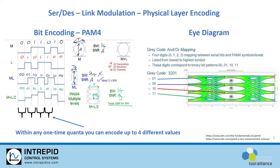To get higher data rates and a reliable data flow, we need to encode more data in one time quanta versus having a single bit of information like a digital one or zero. This is the introduction of pulse amplitude modulation, or PAM, introduced on the serial data flows over the serialized link.